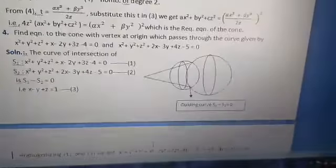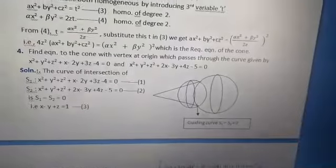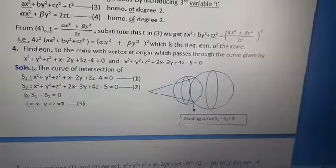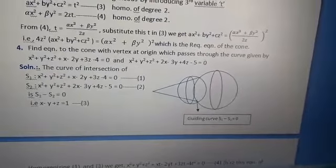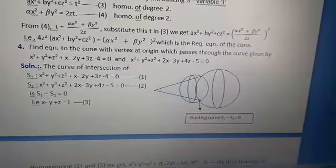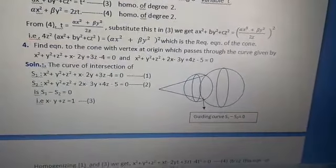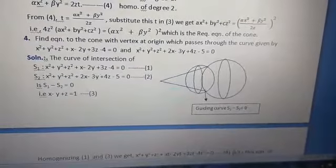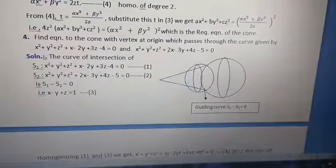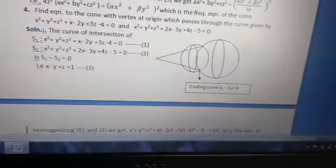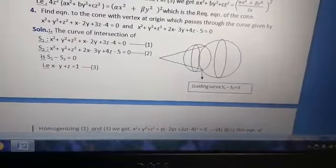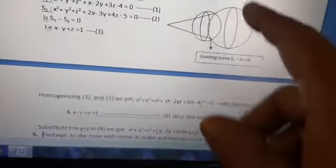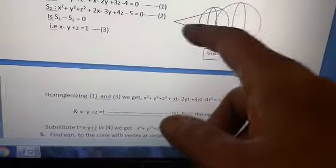Similarly, find equation of the cone with vertex at origin which passes through the given intersection of the two curves like this. Both are spheres, and these two spheres intersect at this portion. And intersection of these two, you can take s₁ - s₂ = 0, so that is x - y + z = 1. That is the portion of these two. And now our guiding curve, this is the guiding curve for the cone.